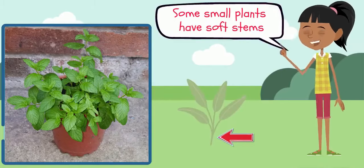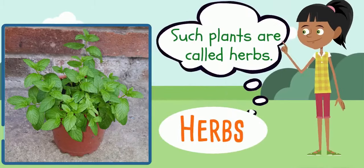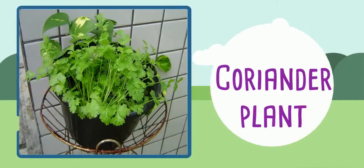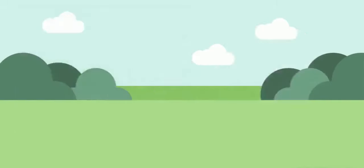Some small plants have soft stems. Such plants are called herbs. For example, mint plant, coriander plant, and basil plant.